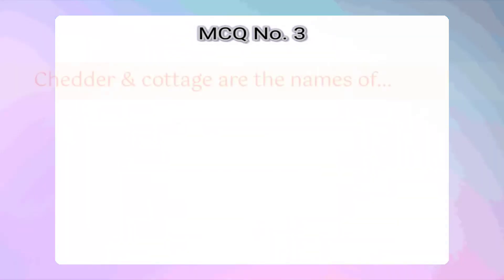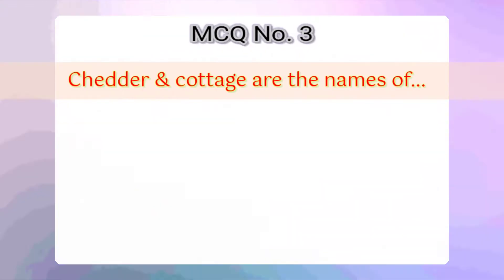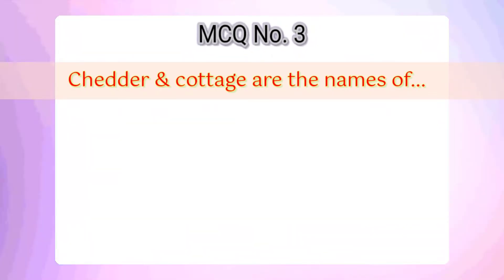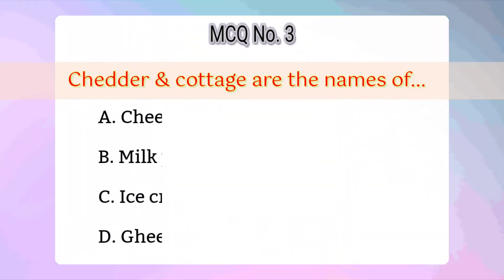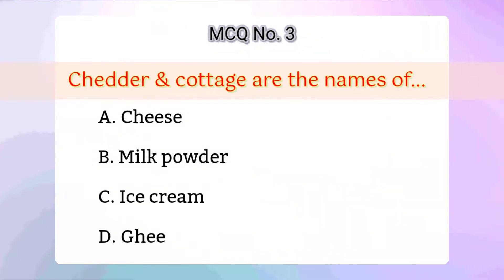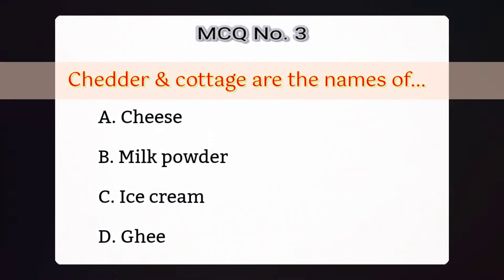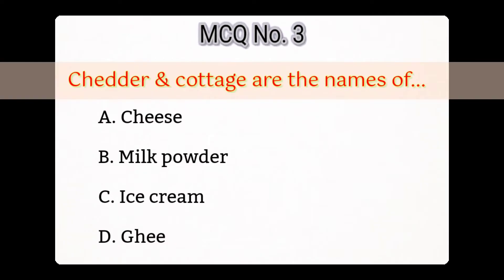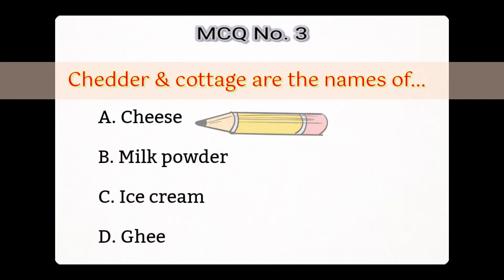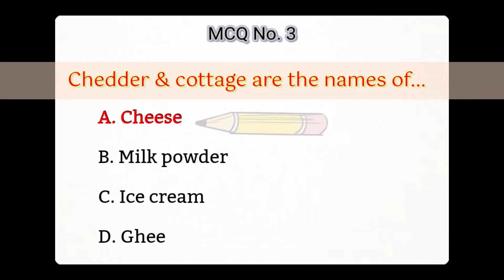Third question: Cheddar and Cottage are the names of — Option A: Cheese, B: Milk powder, C: Ice cream, D: Ghee. Answer is A: Cheese.